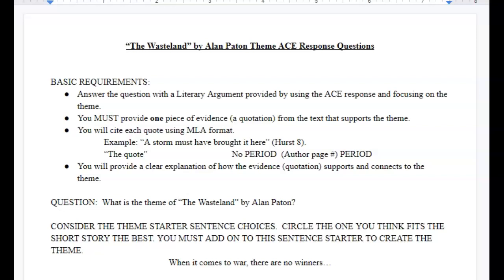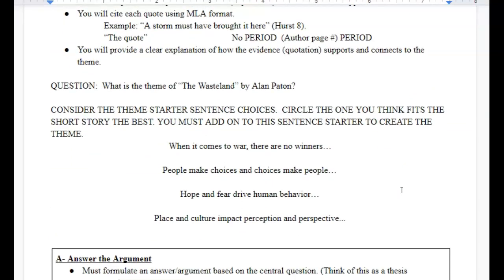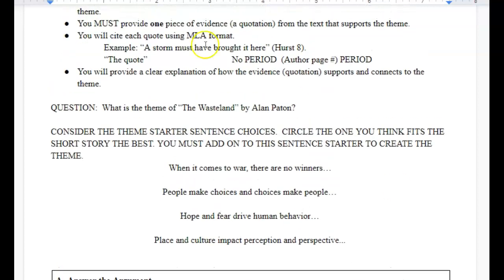So you are going to be analyzing the theme from The Wasteland by Alan Paton. For the basic requirements, you answer the question with a literary argument provided by using the ACE response and focusing on the theme. You must provide at least one piece of evidence, a quotation from the text that supports the theme. You're going to cite your quotation using MLA format.